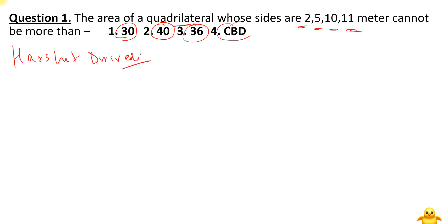I suggest you pause the video, try the questions, then come back. For question number one: we need to find the upper maximum limit of the area of this four-sided figure. I will relate it to the concept of a triangle. In a triangle, if two sides are given, the area of the triangle becomes maximum under a specific condition.